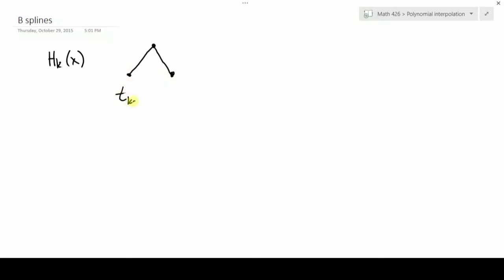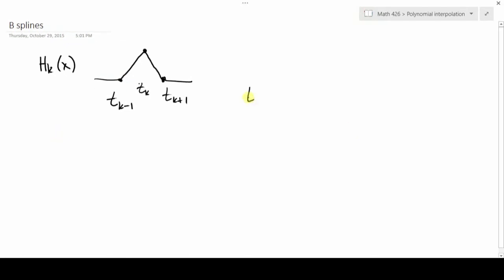So you had tk minus 1 here, tk in between, and tk plus 1 out here. So those three points actually completely determined the hat function. Now what we'll do is we'll take another one of those hat functions defined on the next possible sequence. And we can combine those to get something that depends on all four.